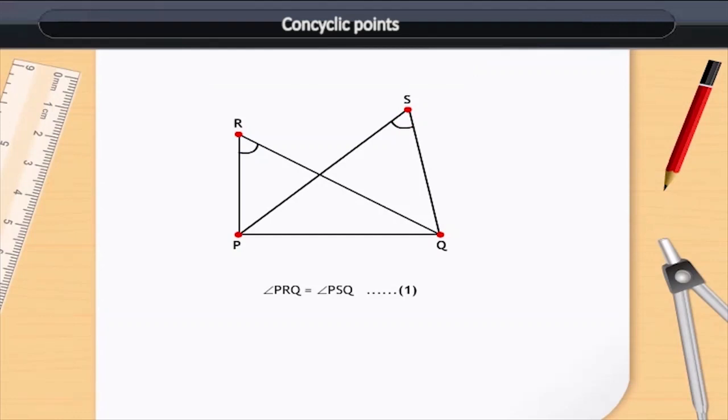Now, look at the image. We know that angle PRQ and angle PSQ are equal and are located at point T of the circle.